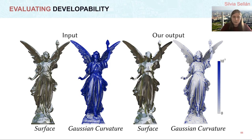After running our method, we see that the non-developability, the blue, is concentrated in creases, which is what we would expect from a piecewise developable surface.